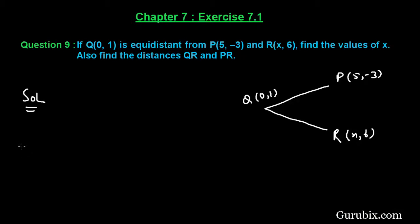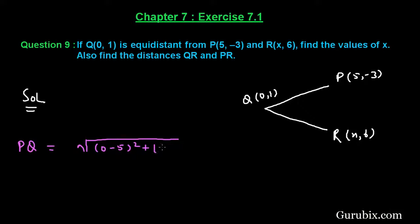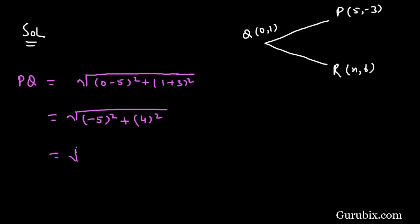Therefore, first of all we shall find the distance between points P and Q. Using the distance formula, PQ = √[(0 - 5)² + (1 - (-3))²], which means √[(-5)² + (4)²], which equals √[25 + 16], which equals √41.